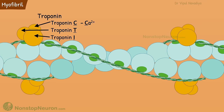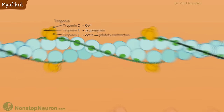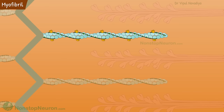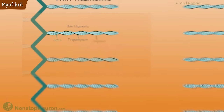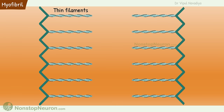Troponin C binds to calcium, troponin T binds to tropomyosin, and troponin I binds actin and inhibits contraction. And of course, there are many such troponin molecules in the thin filament. So this was the thin filament, made up of actin, tropomyosin, and troponin. In a sarcomere, they are arranged like this.